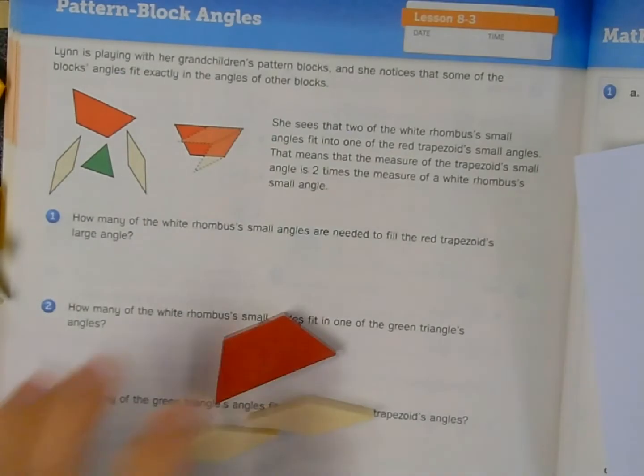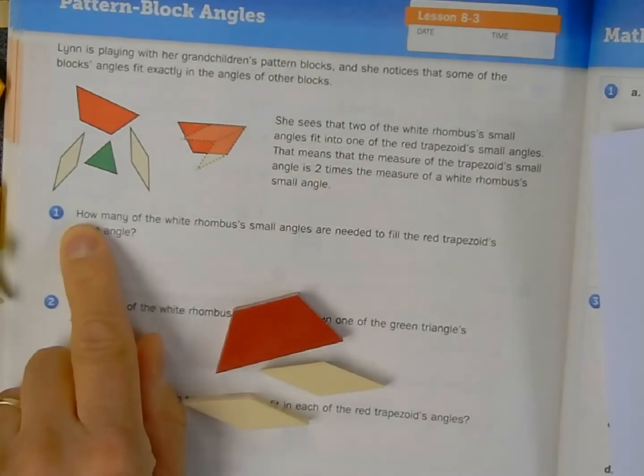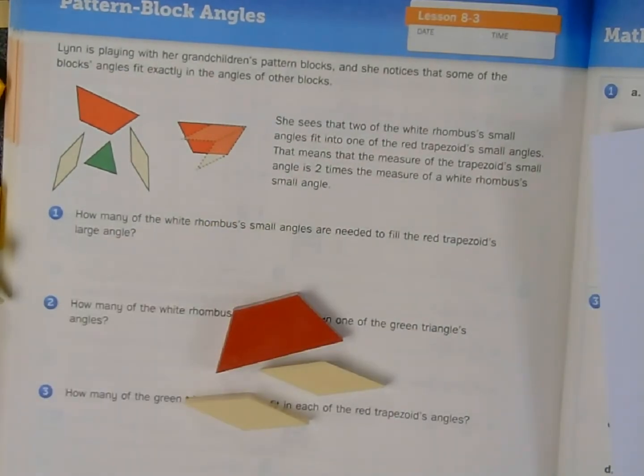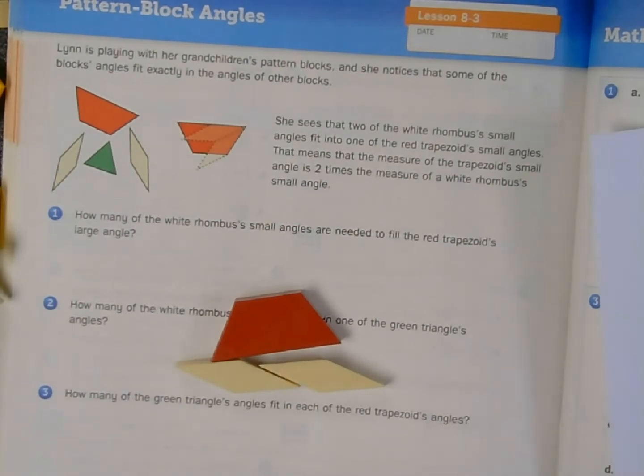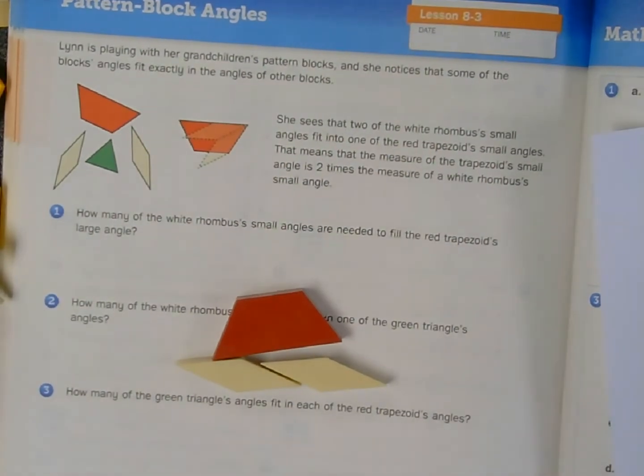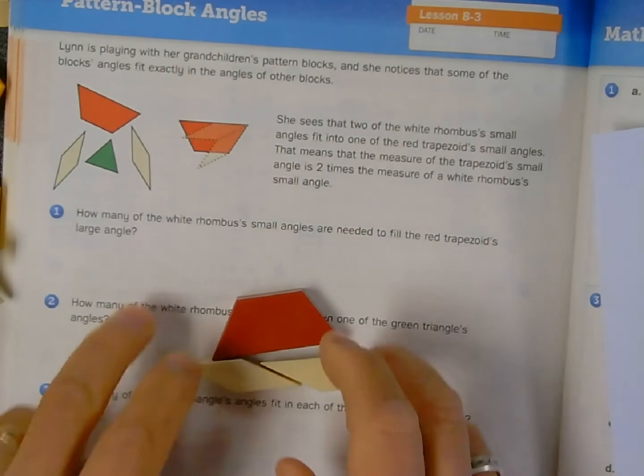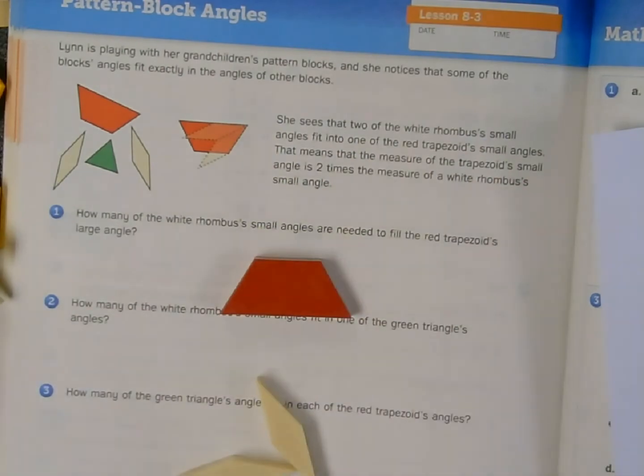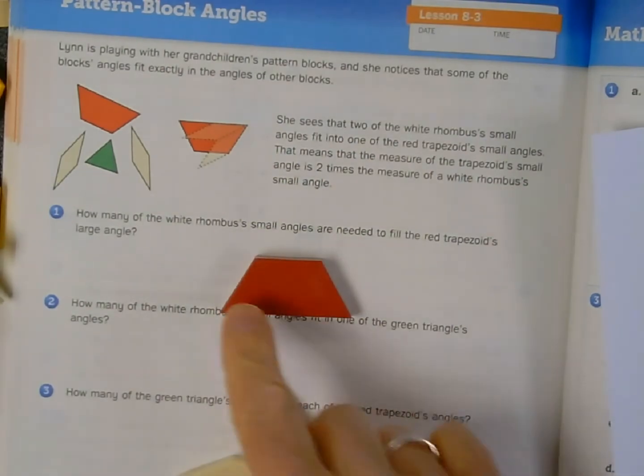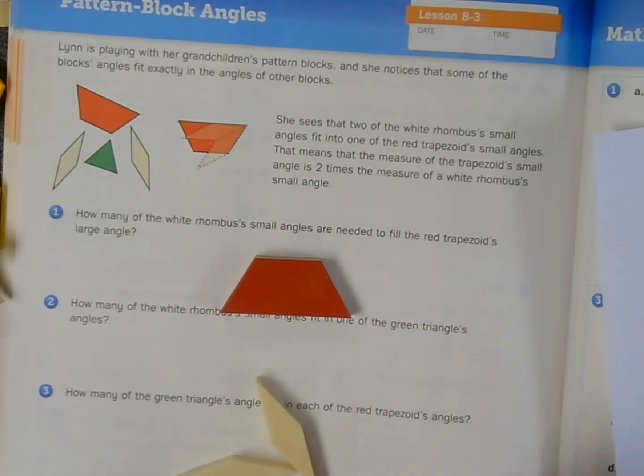So now that I've got some manipulatives to work with, let's read the first problem. It says, how many of the white rhombus' small angles are needed to fill in the red trapezoid's large angle? Now we are using terms like small angle and large angle, but let's actually get a little bit more mathematical. These small angles are what we would call acute, right? Because they look like they're less than 90 degrees, like they would be on a square.